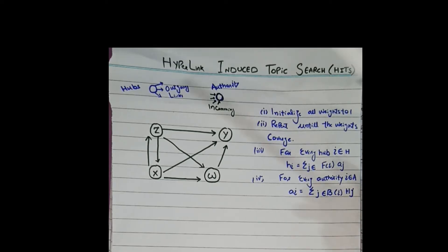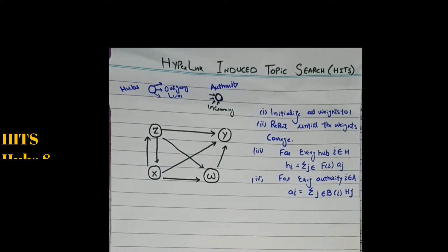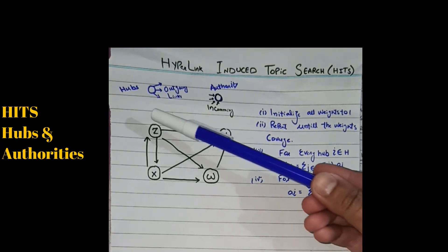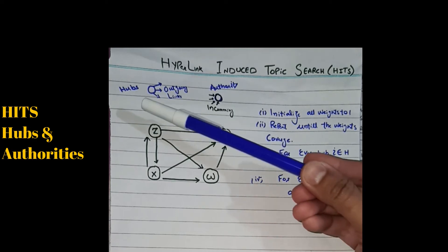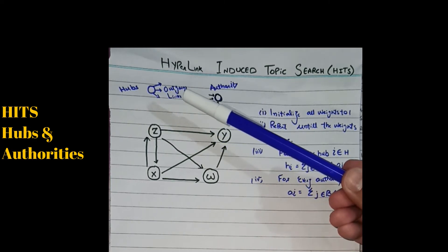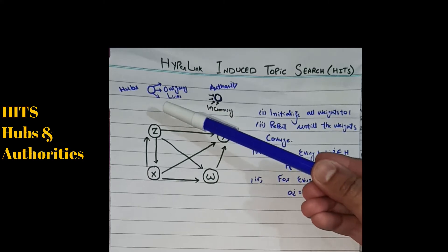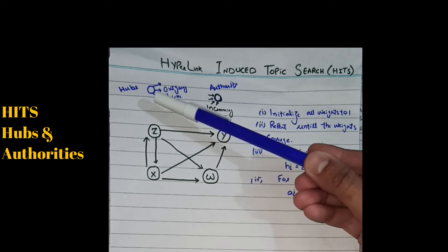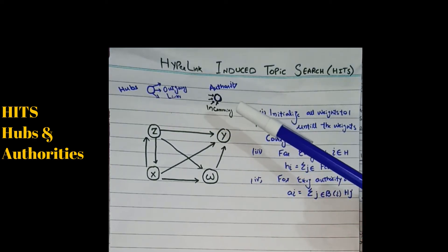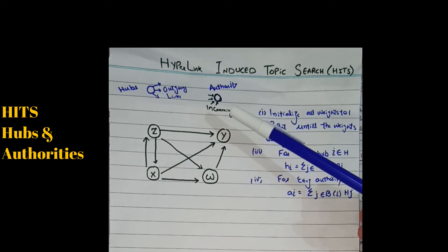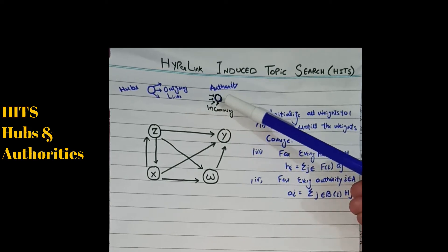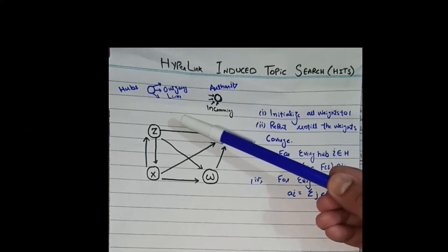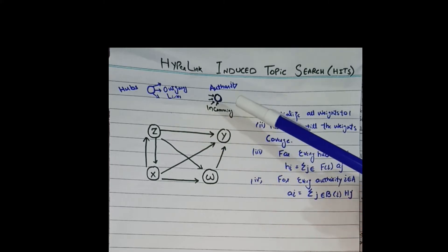The first concept is hubs and the second is authority. Hubs are the outgoing links from a node. For example, in this graph there are three outgoing links from a node, so the hub value is three. Authority is the incoming links to a node — for example, this node has four incoming links, so its authority is four.